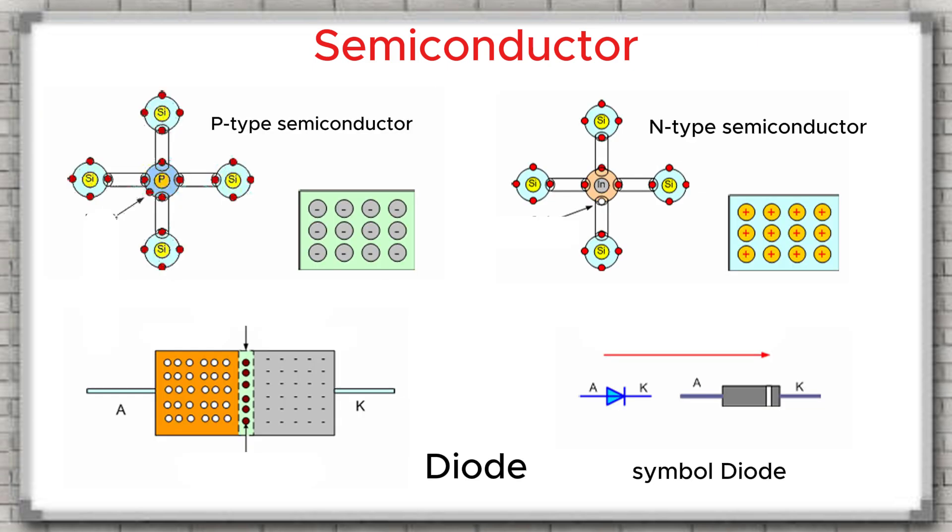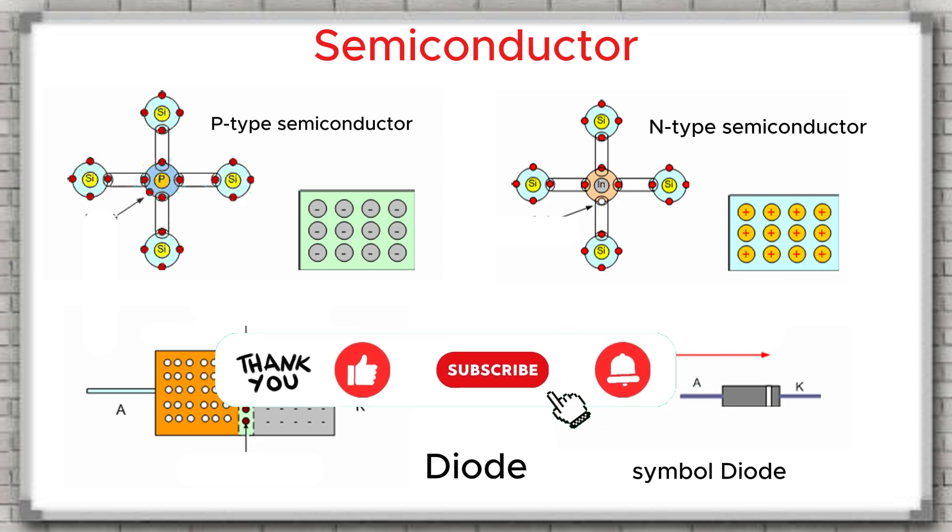So in this lesson, I have helped you understand semiconductors and diodes. The reason why I put them together is because the diode is the most basic and original component that comes directly from semiconductor material. This makes it easier for you to imagine and understand. Thank you for watching. Don't forget to like, share, and subscribe so you won't miss the upcoming lessons.